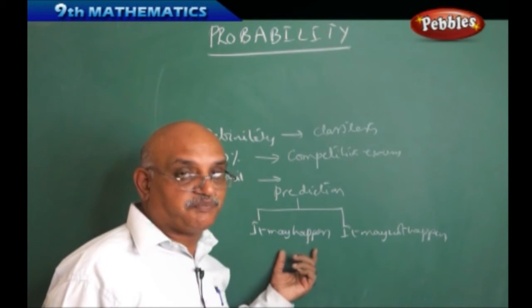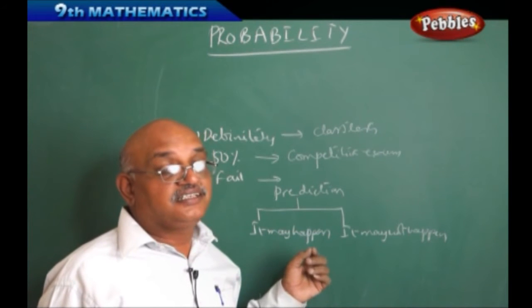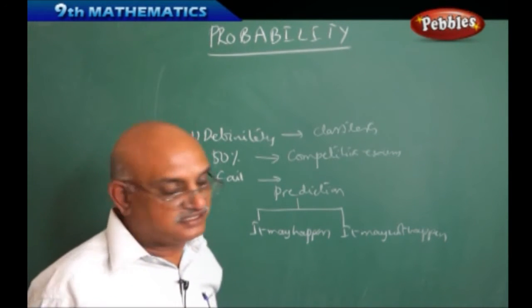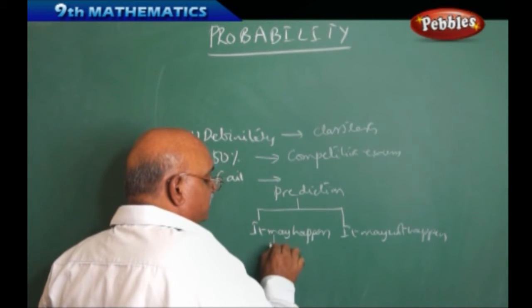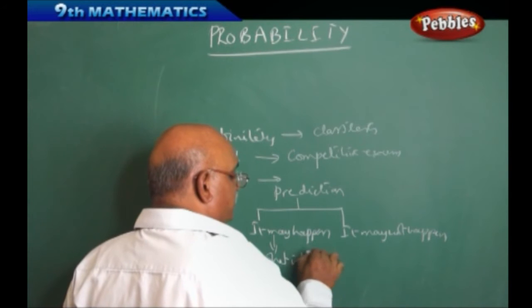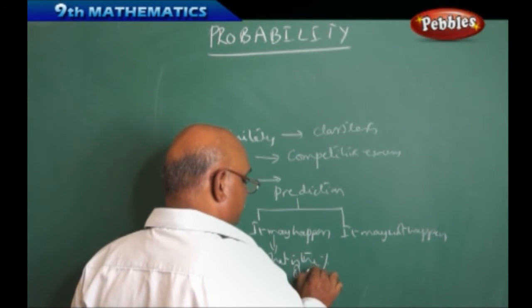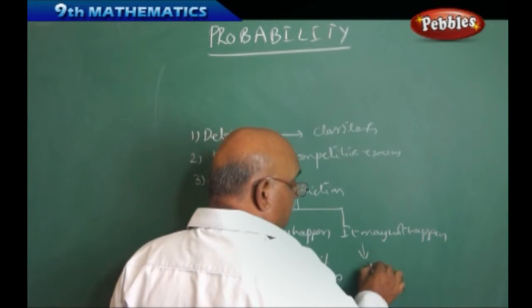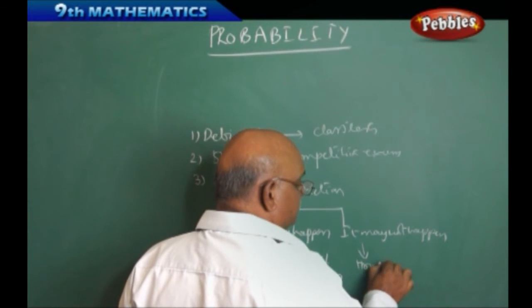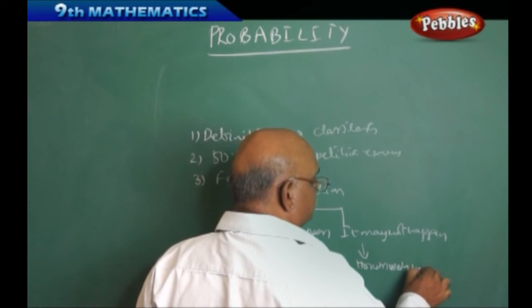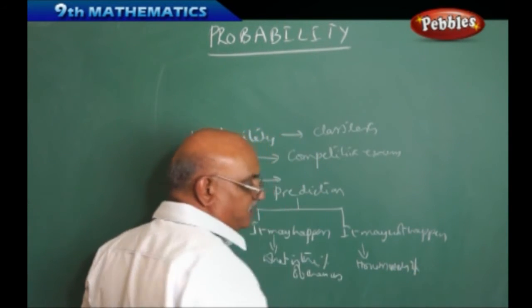What does it mean it may happen? That implies the chances that may occur, the possibilities. But what is the percentage of happening? That is the question. What is the percentage of chances? In the same manner, it may not happen means how much percentage you are going to? That is the logic behind this.